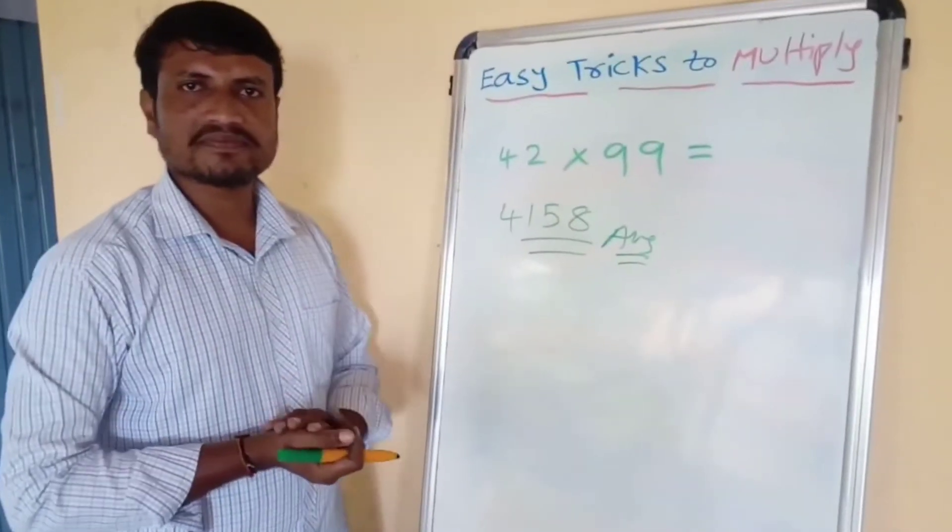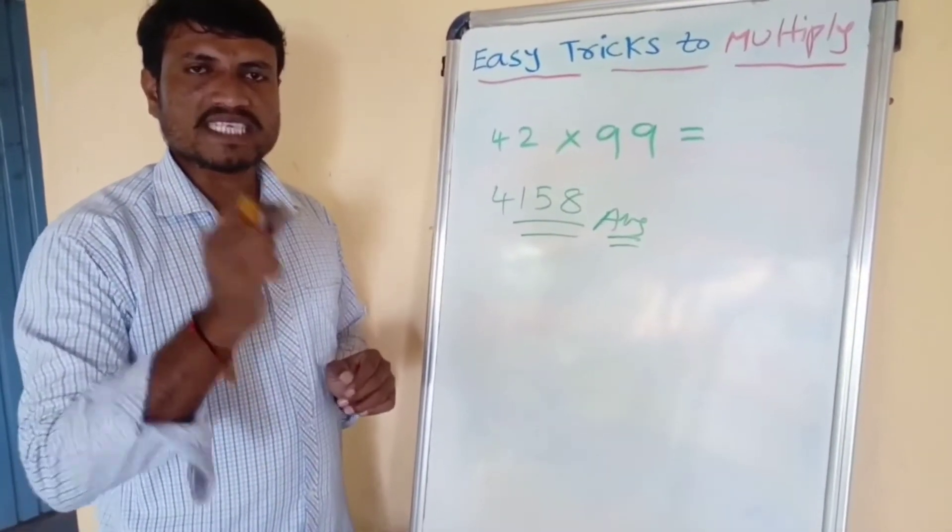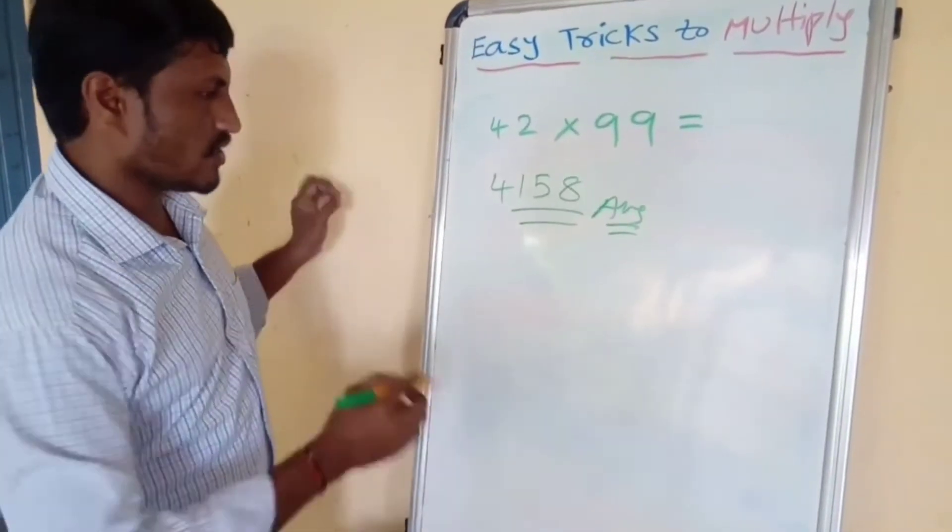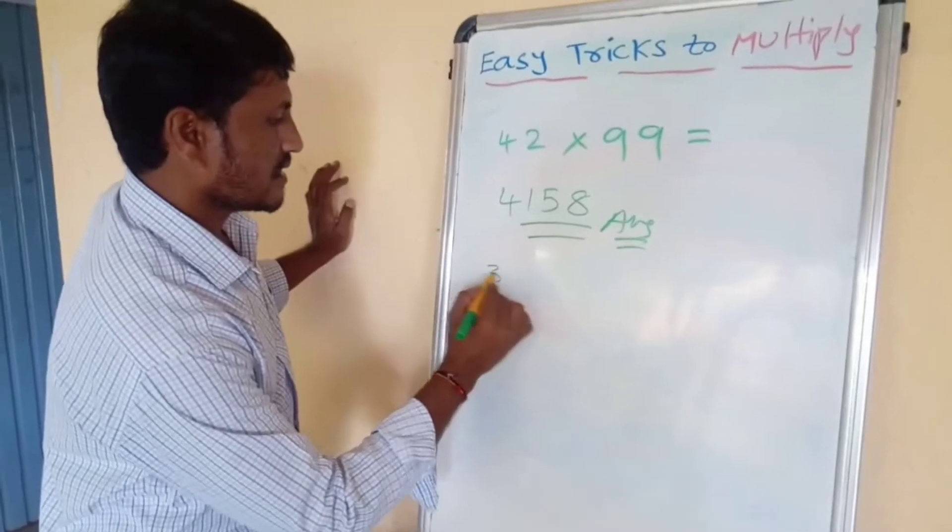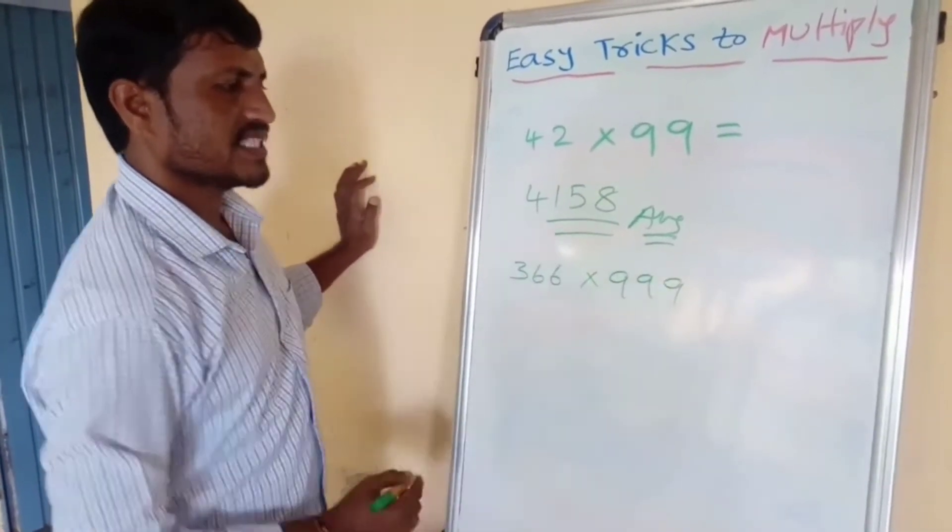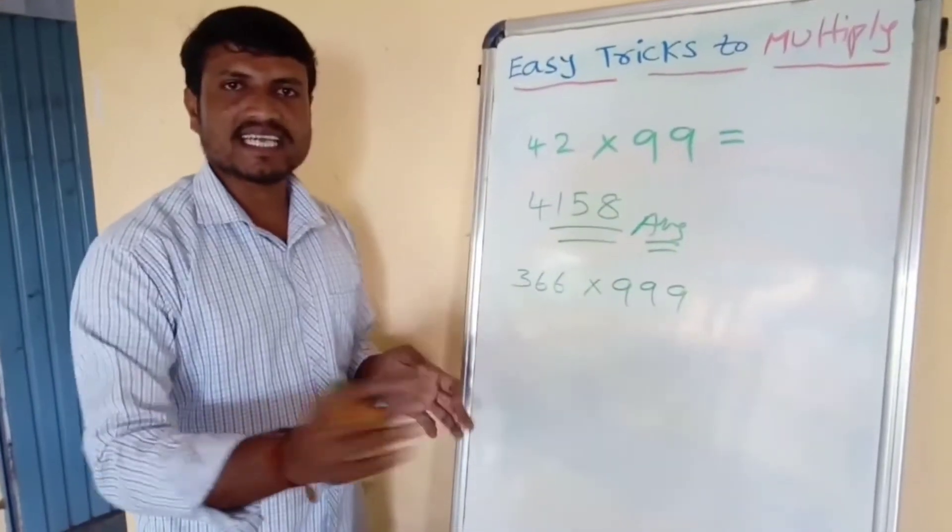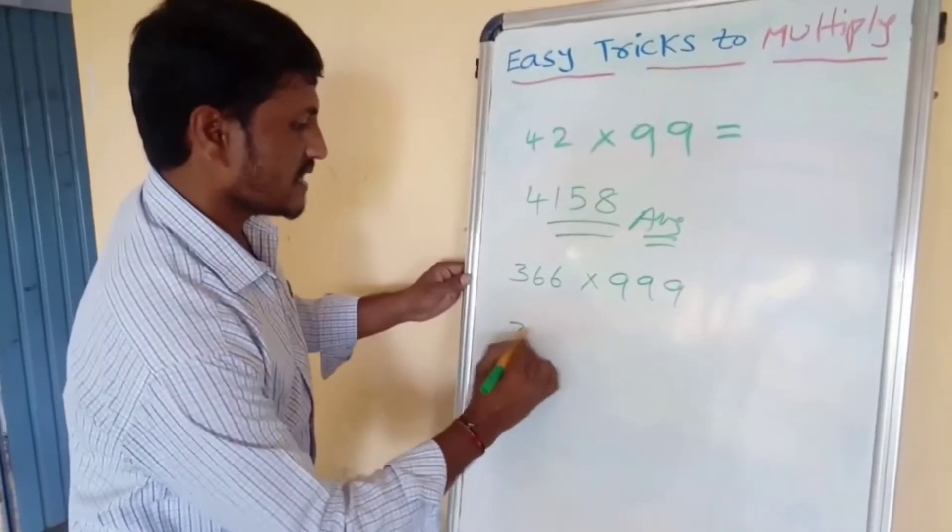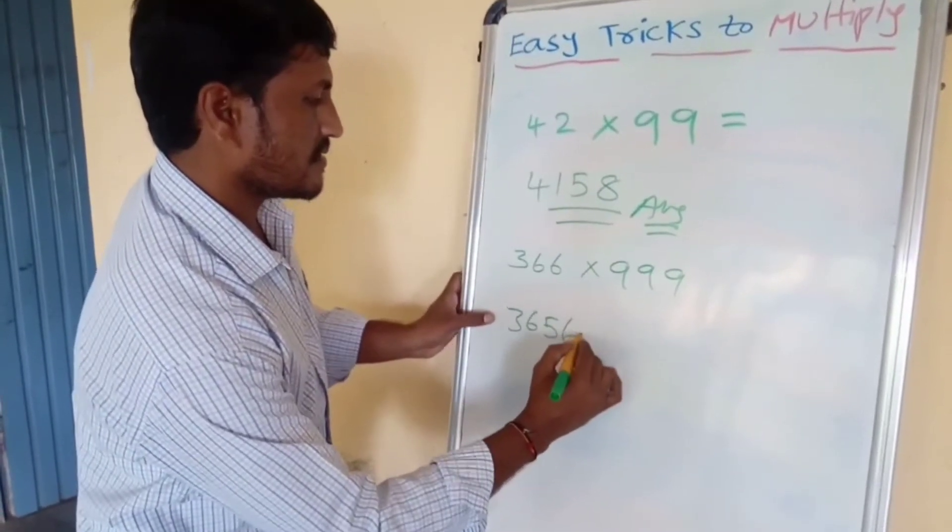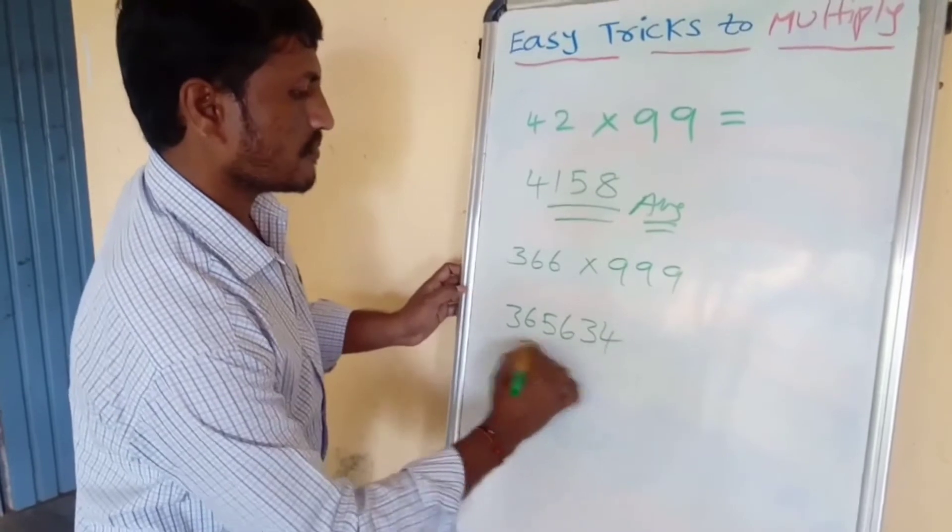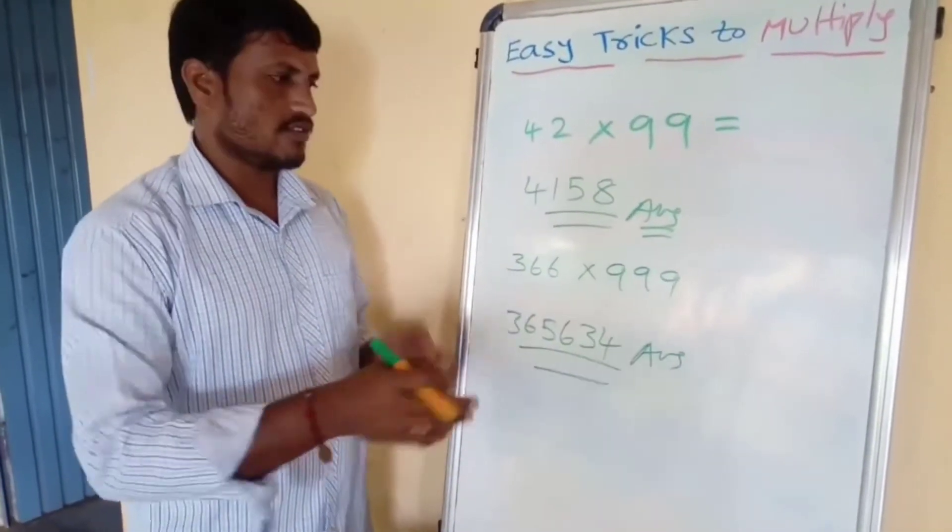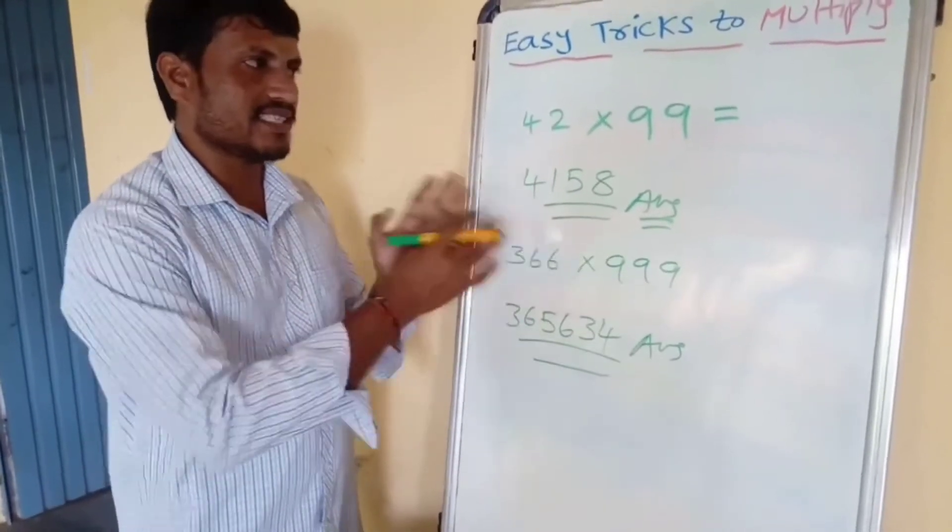How is it possible? There is one method. I can say. After, one more example: 366 times 999. This is also I can say in three seconds. Example: 365,634. This is the answer. How is it possible? Now you listen, I am saying.